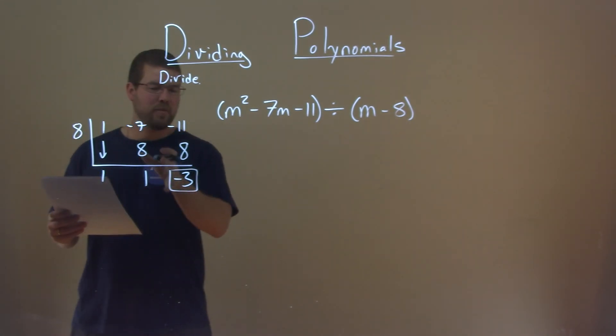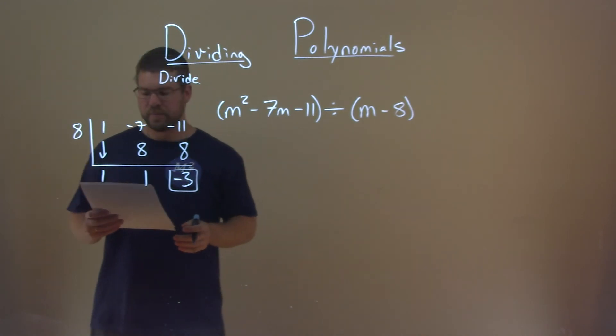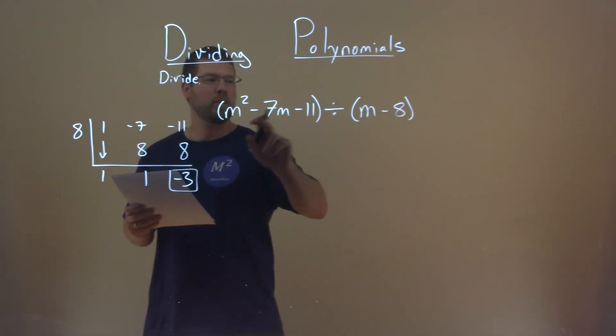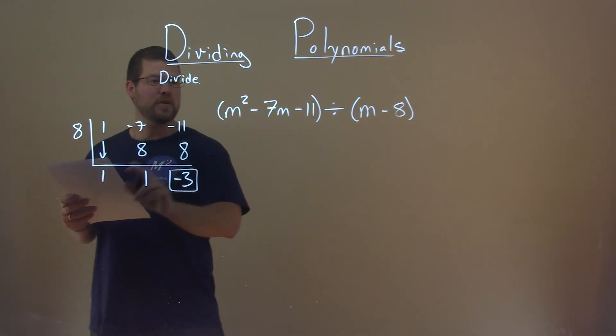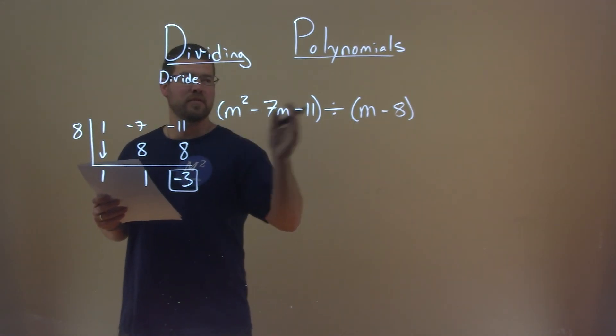So how do we translate back to an answer here? Well, we're dividing m squared by an m, and so this is going to be actually the coefficient. M squared divided by m is just an m.